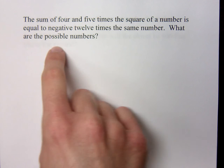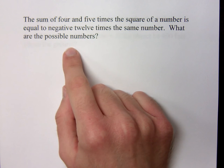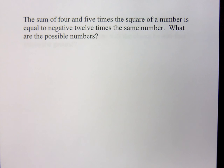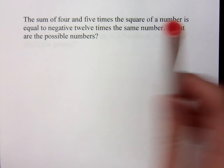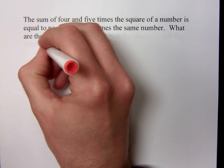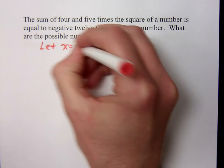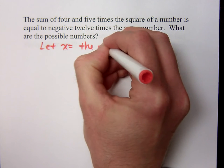It says the sum of 4 and 5 times the square of a number is equal to negative 12 times the same number. What are the possible numbers? So we're looking for the numbers. Let x equal the number. This is what we're looking for.